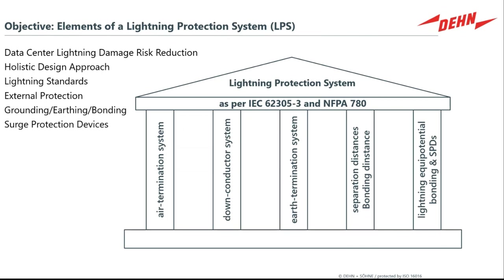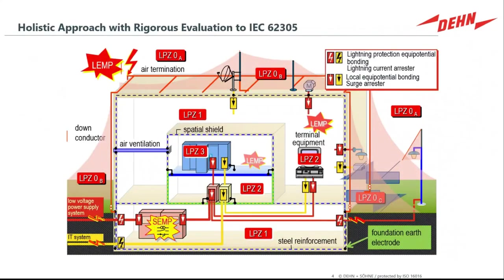Our objectives for this session focus on data center lightning damage risk reduction. We like to use a holistic, all-encompassing approach to evaluate lightning standards and apply external lightning protection, grounding, earthing, and bonding — concepts Ben Franklin figured out in 1752, still working today — along with newer concepts like surge protection devices that DANE helped pioneer. This is sketched out of the IEC methods: think of it like layers.